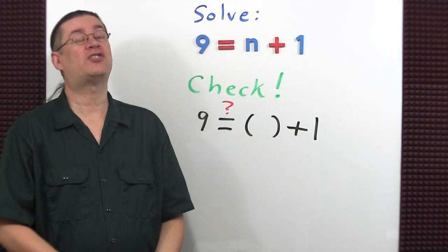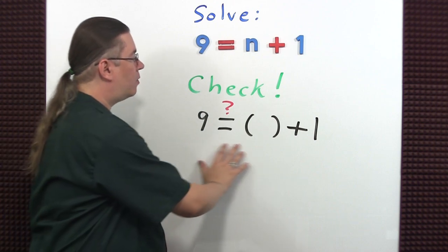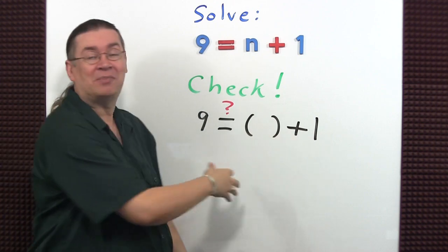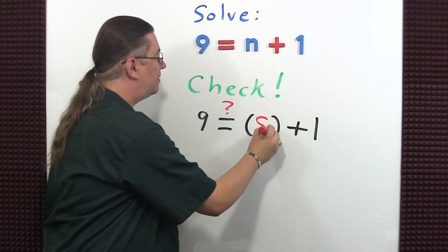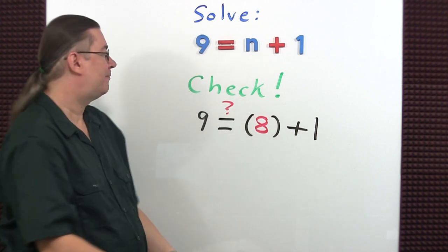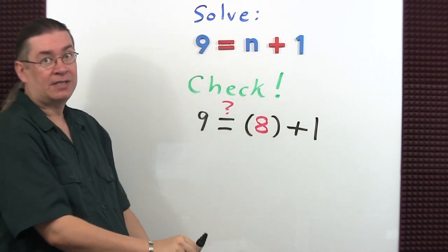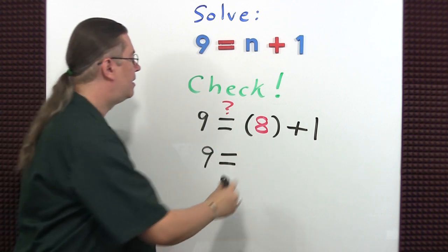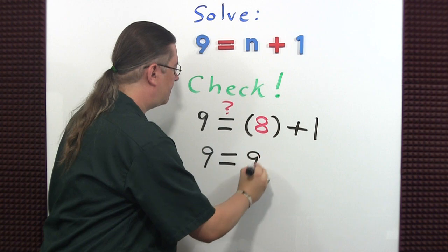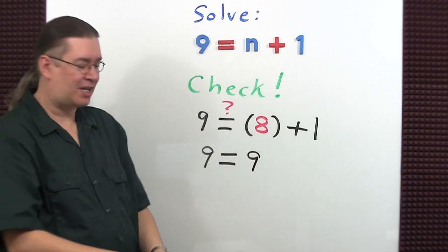Now let's officially check our solution. Rewrite the equation, put parentheses in place of the variable, and n was equal to 8. Then continue simplifying: 9 equals 8 plus 1 is 9, so it checks.